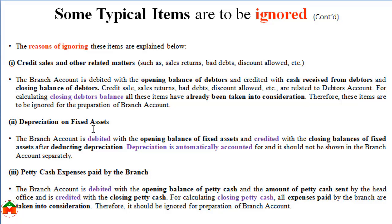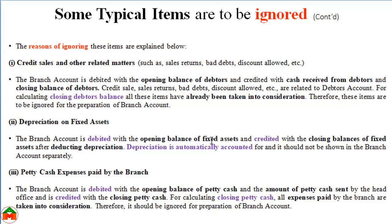We don't provide journal entries for depreciation on fixed assets of the branch because the branch account is debited with the opening balances of fixed assets and credited with the closing balances of fixed assets. Whenever we record the closing balances, all depreciation is automatically adjusted — that's why we don't need to record depreciation separately, since it is already adjusted in the closing balance of fixed assets.